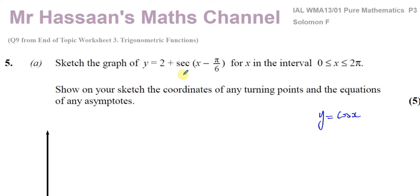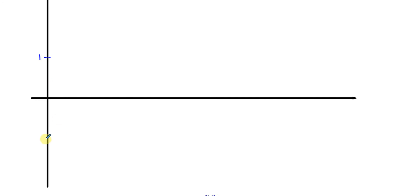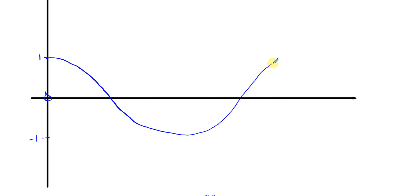We have to show the coordinates of turning points and asymptotes on this graph. Let's start by making a sketch of y equals cosine x. Between zero and two pi, cosine x has a maximum of one and a minimum of minus one. It starts at the point (0, 1), drops to zero at pi over two, reaches the minimum at pi, returns to zero at three pi over two, and back to one at two pi.